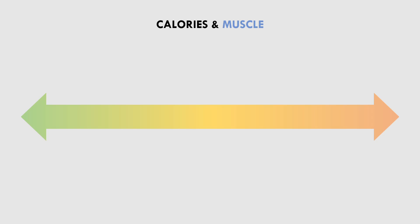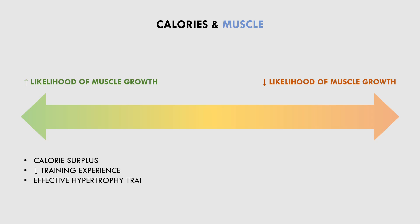I think it is best to look at changes in muscle size on a spectrum rather than as strict rules. On one side of the spectrum we have a calorie surplus, on the other side we have a calorie deficit, and in the middle we have calorie maintenance. We also have other variables like resistance training status, training effectiveness, and body fat level. On one side of the spectrum we are more likely to gain muscle, and on the other side we are less likely to gain muscle or even lose muscle. So if we eat in a calorie surplus, we are beginner trainees, our training program is highly effective, and our body fat is not excessively lean, then our chances of gaining muscle are very high.